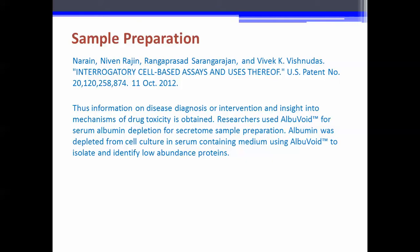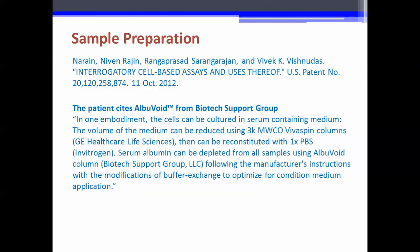Albumin was depleted from cell culture in serum-containing medium using Albuvoid to isolate and identify low abundance proteins. The patent cites Albuvoid from Biotech Support Group, quoting: 'In one embodiment, the cells can be cultured in serum-containing medium. The volume of the medium can be reduced using 3K MWCO Vivaspin columns, GE Healthcare Life Sciences, then reconstituted with 1x PBS, Invitrogen. Serum albumin can be depleted from all samples using Albuvoid column, Biotech Support Group, following the manufacturer's instructions with modifications of buffer exchange to optimize for conditioned medium application.'